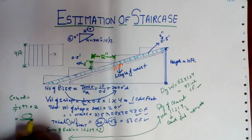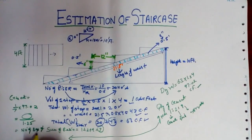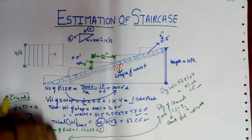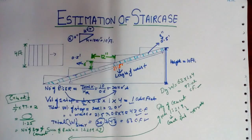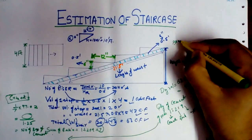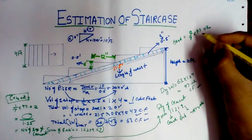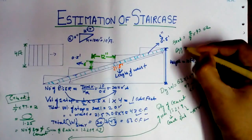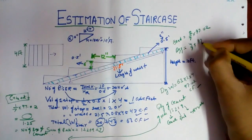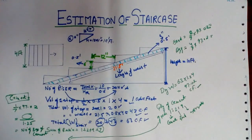If you divide by 1.25, you will get the number of bags of cement. For sand, divide 2/7 into 97.02. Similarly, for aggregate, it is 4/7 into 97.02. This is the way we calculate the estimate of a staircase.